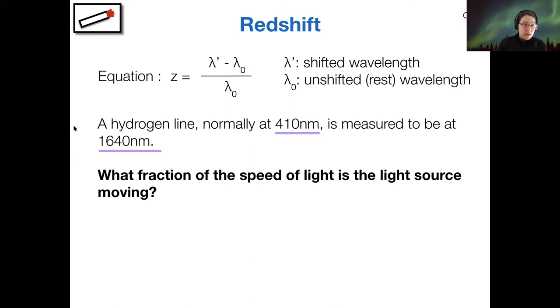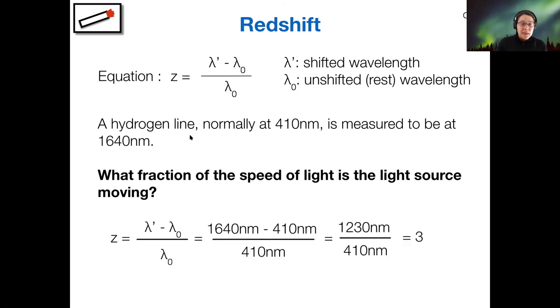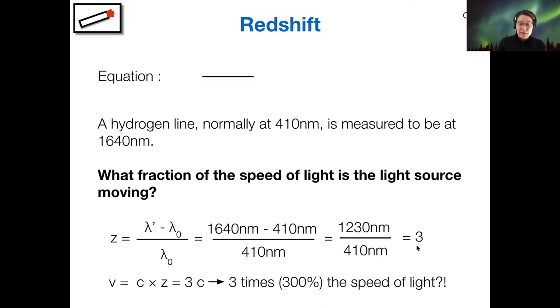All right. Yeah. So I'm seeing a lot of three, 300%, right. So that doesn't seem good, right. So if we have our redshift equation and we actually apply the numbers given, we get three, and yeah, that's going to be 300% the speed of light, but the speed of light is supposed to be a cosmic speed limit, right? Nothing is supposed to go faster than light. So how is it possible for an object to be going three times as fast as the speed of light?